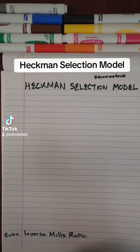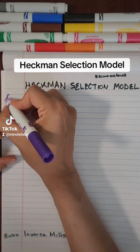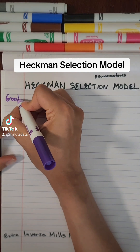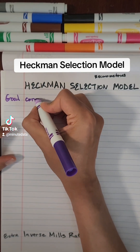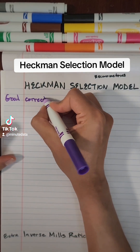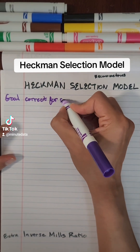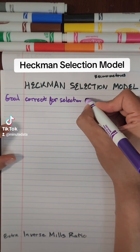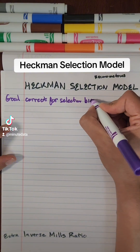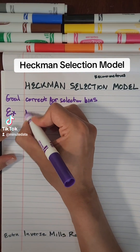Let's learn about Heckman's selection model from Econometrics. The goal is to correct for selection bias — let's jump to an example.